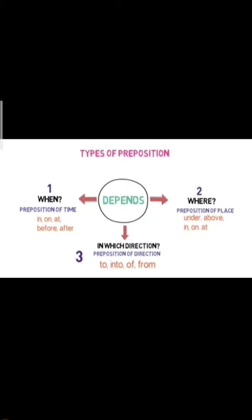Short revision: We have learnt three kinds of preposition. Preposition of time — ye pata chalta hai ki woh cheez kab hui — we use in, on, at, before, after. Preposition of place or position — ki woh cheez kahan hui — we use under, above, in, on, at. Preposition of direction — kaunsi direction mein hui — ke liye we use to, into, of, or, from.